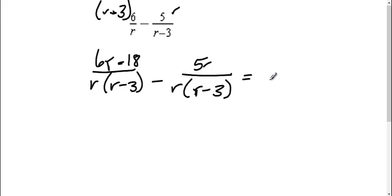Now that it has a common denominator, I can combine it and put it all over the common denominator. So I get 6r minus 18 minus the 5r.